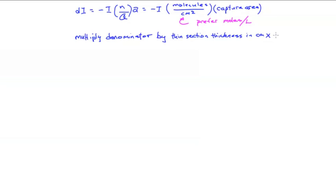We can convert cubic centimeters to liters by multiplying by 10 to the minus 3. And we can convert from molecules to moles by dividing by Avogadro's number.